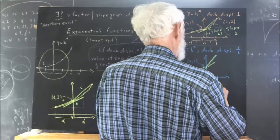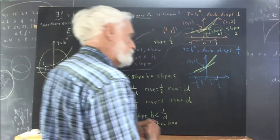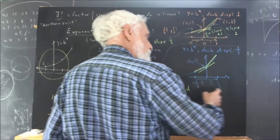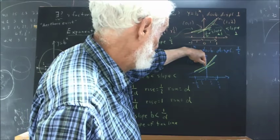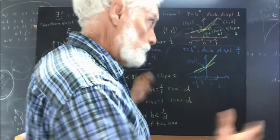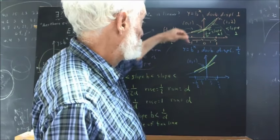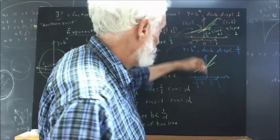I've got one-half here telling me that my x-coordinates are negative one-half and one-half. Again, I've got the point zero-one on the graph. That makes no difference. The doubling displacement makes no difference. y equals b to the x always goes through the point zero-one.